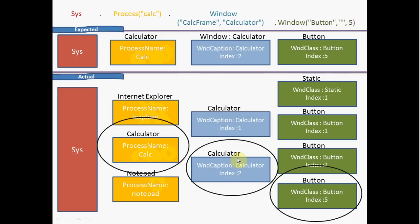During runtime, even though there are Internet Explorers, two calculators, and several buttons, TestComplete is going to click on the exact expected button. If TestComplete doesn't find this button, it will throw an error.